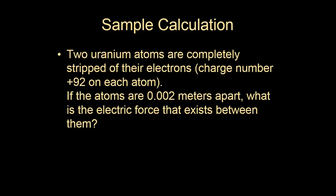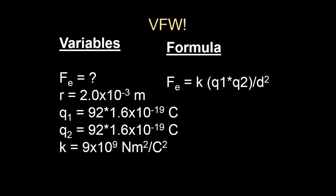We have two uranium atoms that are completely stripped of their electrons. So we have 92 protons attracted by 92 more protons. And the distance is 0.002 meters apart. Here's our VFW. I'm going to multiply 92 protons by the elementary charge number. Here's my Q2. 92 times that. There's K in the distance. 2 times 10 to the negative 3.